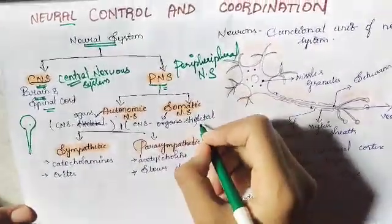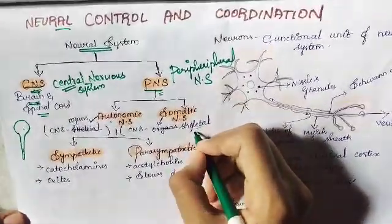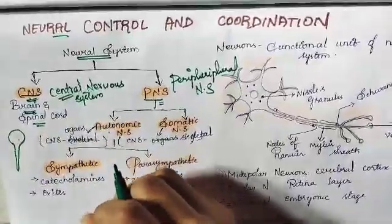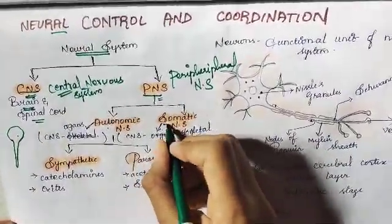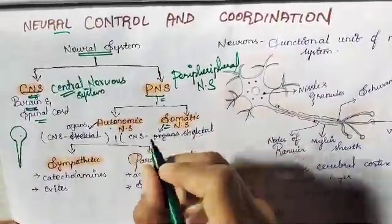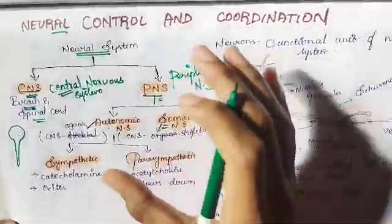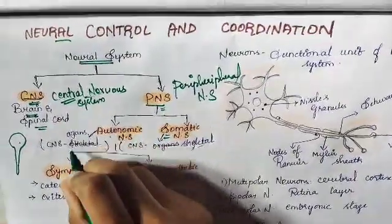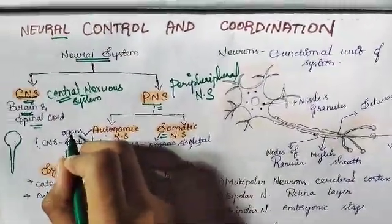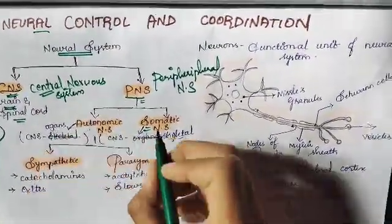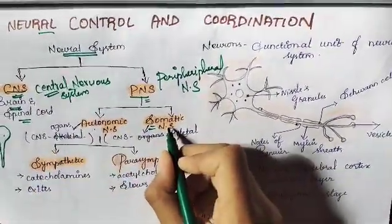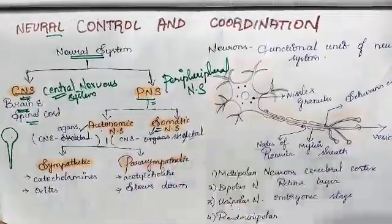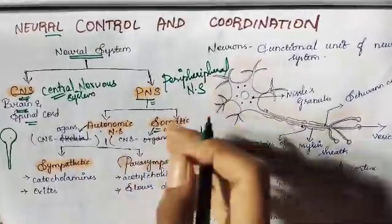The skeletal muscles at the edges of our body are controlled by the somatic nervous system. Be clear with this. Autonomic nervous system: CNS to organs. Somatic nervous system: CNS to skeletal system.